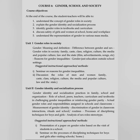Unit 1 is Understanding Gender Roles in Society: gender — meaning and definition; difference between gender, sex and gender roles in society — family, caste, class, religion, culture, media, popular culture, law and the state — like film, advertisement, song, etc.; reasons for gender inequality; gender-just education outside a school setting. Unit 2 is Gender Identity and Socialization Process: gender identity and socialization practice in family, school and organization; role of school, peer, teacher, curriculum and textbook in challenging gender inequality or reinforcing gender parity; actual gender roles and responsibilities assigned in schools and classrooms; measurement of gender identity; discrimination of gender in classroom interaction, rituals and school routines; process of disciplining techniques for boys and girls; analysis of sex-role stereotypes.